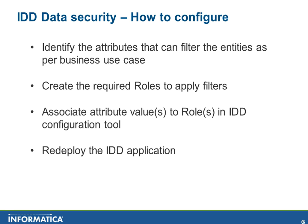How to configure data security: First, identify the attributes that can filter the entities as per the business use case. For example, if the organization has decided to restrict data based on geo, and there is a column like country, you can write a filter saying country code equal to US, then this data should be shown only for US data stewards. Next, create roles so that the data security applied is mapped to roles, and the corresponding users have this data security applied. The association or mapping is done between roles and the condition — the condition is the data security filter. Redeploy the IDD application and you should see data security enabled.